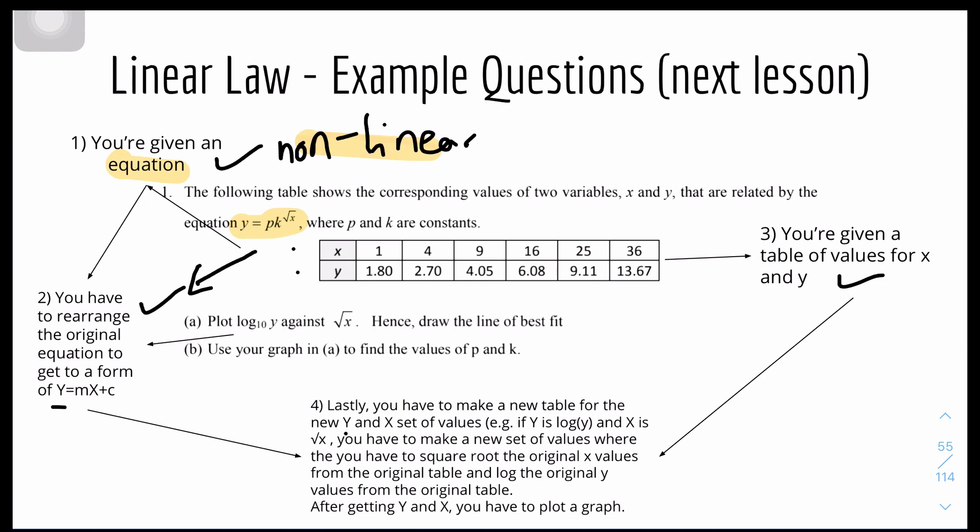Let's take this example: y equals pk to the power root x. If you rearrange the equation, I'll just do it quickly, you'll get log y equals log k root x plus log p. So now you have the new value for Y equals mX plus c, and you can see that the new Y is log y and the new X, big X, is root x.